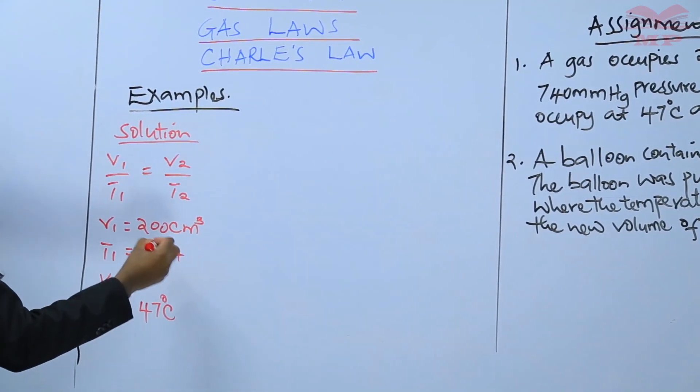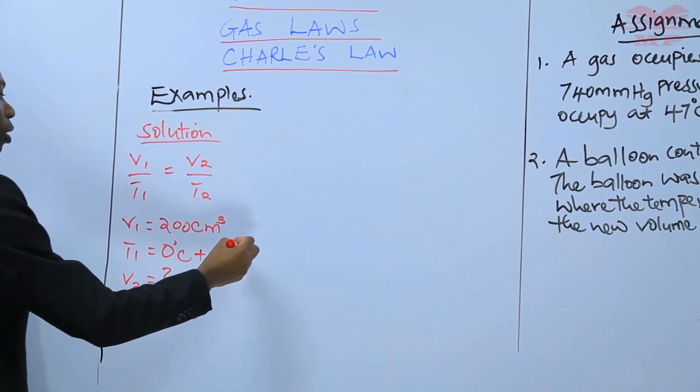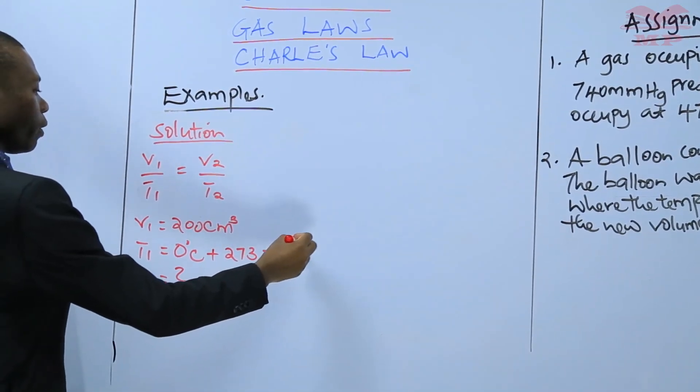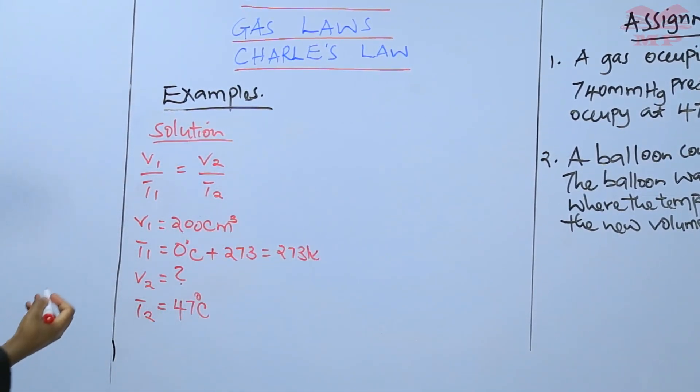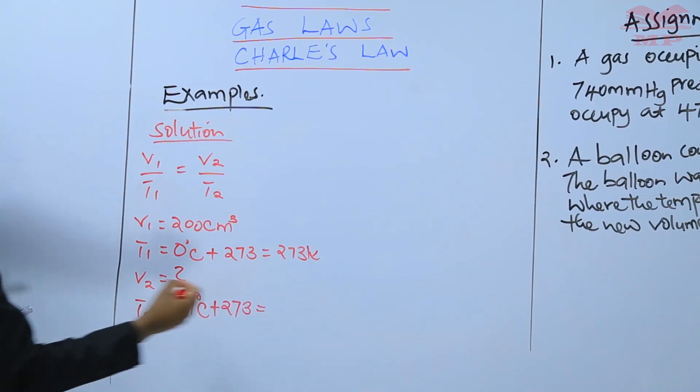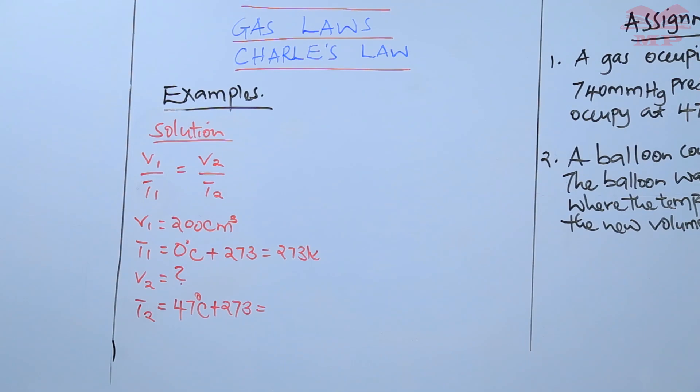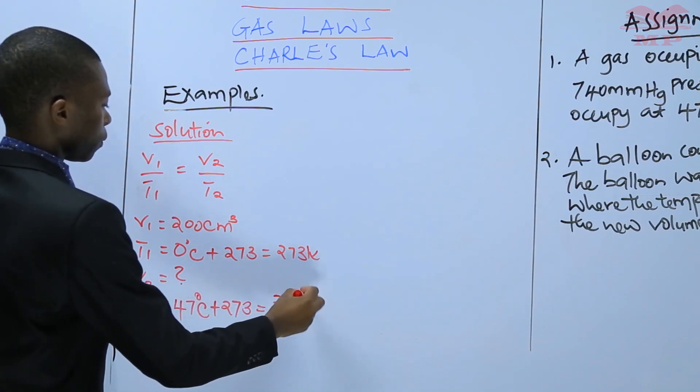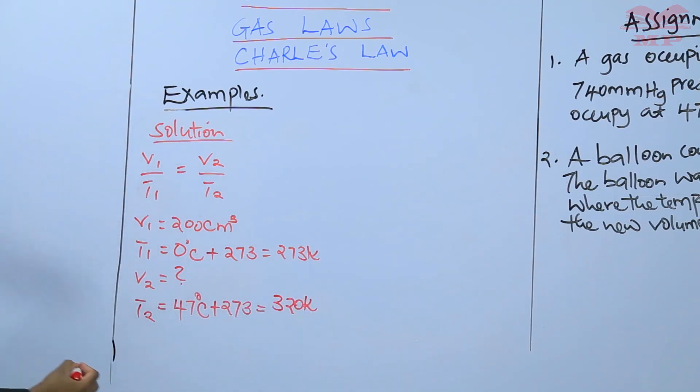It will be zero degrees Celsius, then you add 273 and this will give you 273 Kelvin. Also 47, you add 273 to make them Kelvin, and this will give you 320 Kelvin.